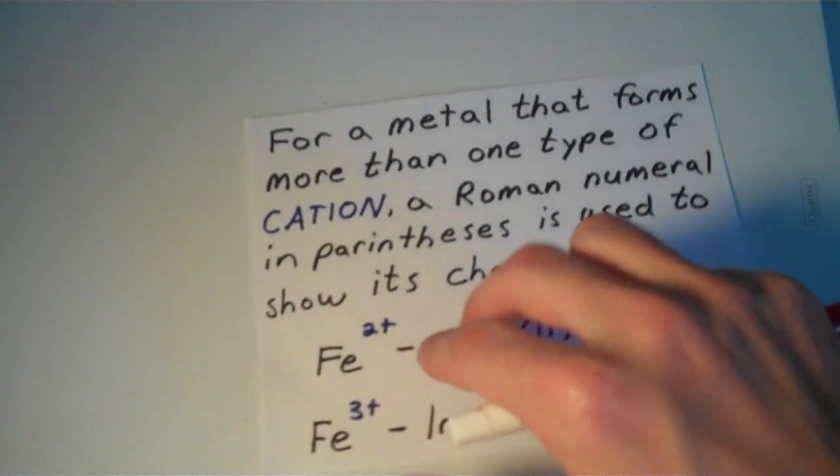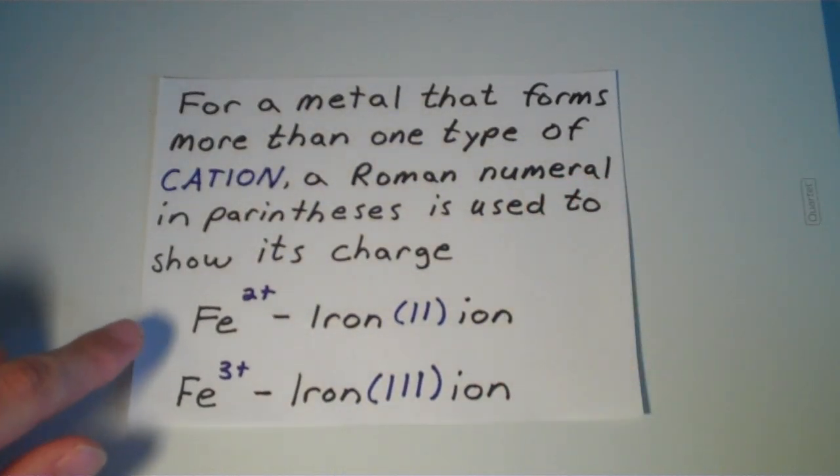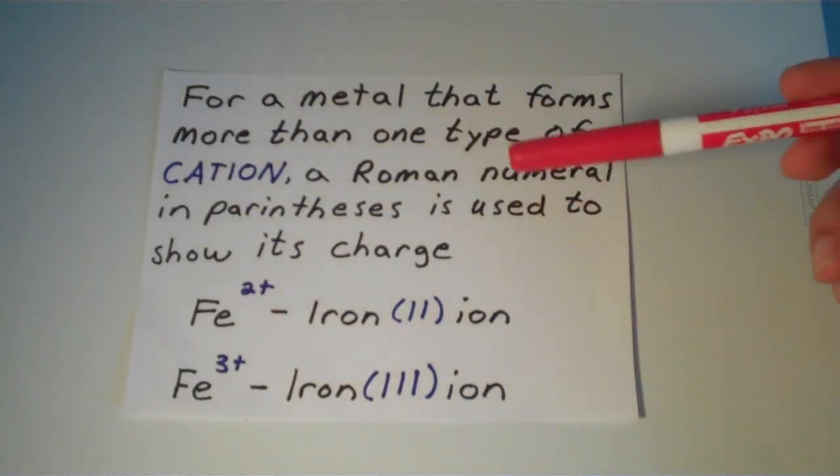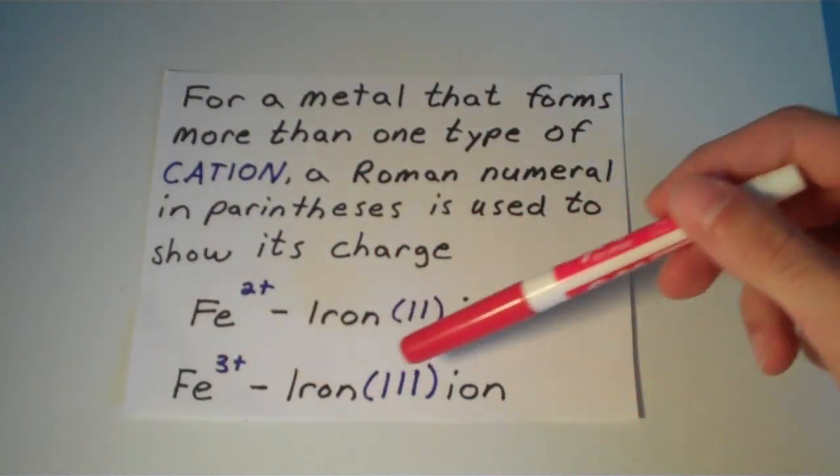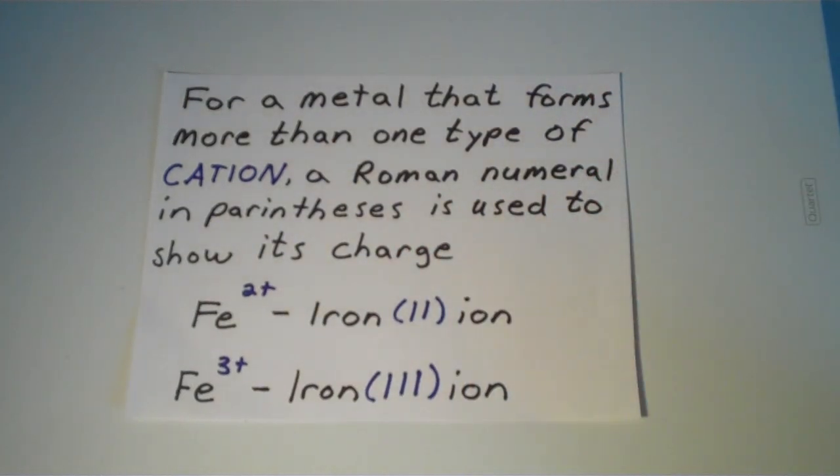Another tip when trying to name ionic compounds is that any time you have a metal that forms more than one type of cation, a Roman numeral in parentheses is used to show its charge. So Fe2+ we call the iron(II) ion. Fe3+ we call the iron(III) ion, because iron is a metal that can form more than one type of cation.